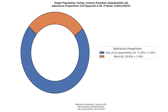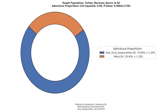Next, the Anatolian hunter-gatherers carry almost 29% Basal Eurasian admixture. Moving on to the Anatolian Neolithic farmers, they carry 29.4% Basal Eurasian admixture.